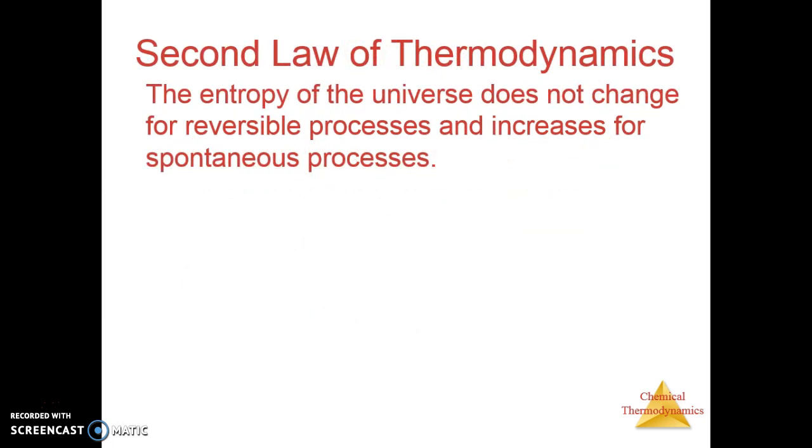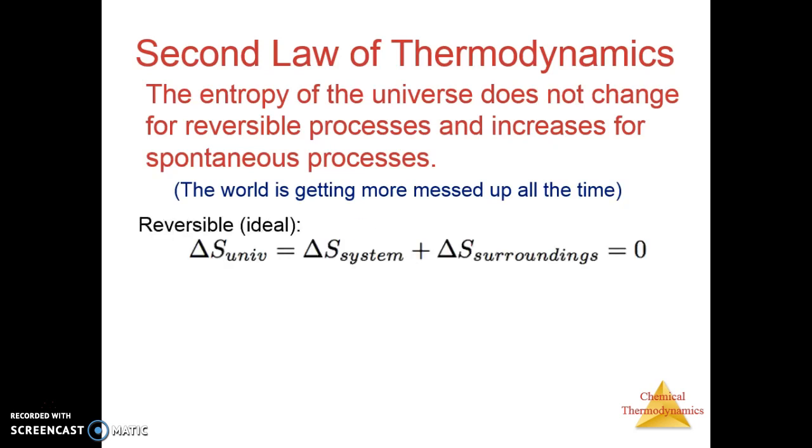Entropy leads us into the second law of thermodynamics. It says that the entropy of the universe does not change in a reversible process and it increases for a spontaneous process. For a reversible process, delta S is zero. For a spontaneous process, delta S is positive. Disorder increases in a spontaneous process. For a reversible process, the delta S of the universe is zero. The change in entropy of the system is equal but opposite to the change in entropy of the surroundings.